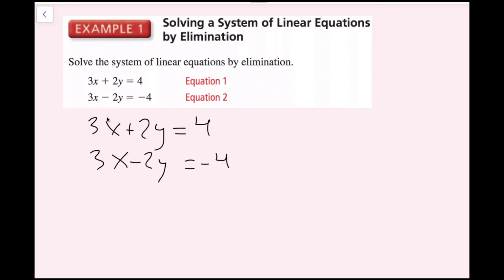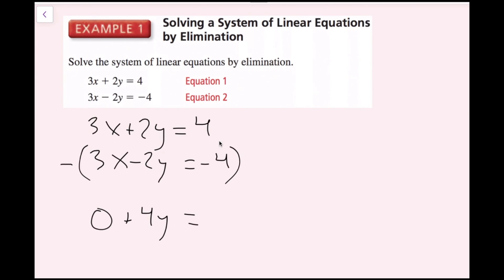Since the x's have the same coefficient — a 3x and 3x — the way to eliminate them is by subtracting. I'll put parentheses around the entire second equation and put a minus sign. So I get 3x minus 3x, which is 0. Then 2y minus negative 2y is the same as 2y plus 2y, which is positive 4y. And 4 minus negative 4 becomes 4 plus 4, which is 8.